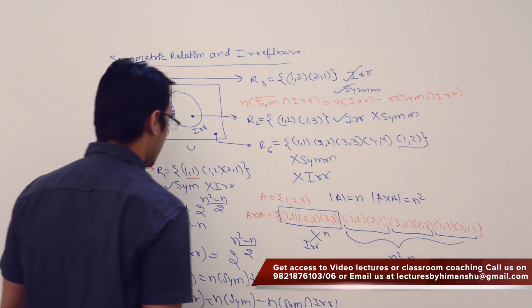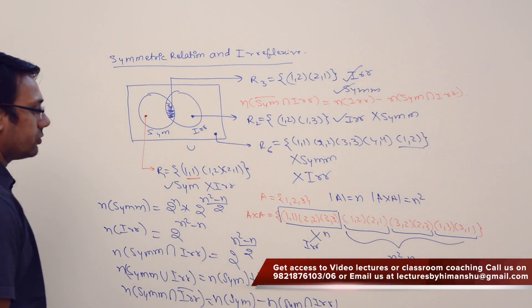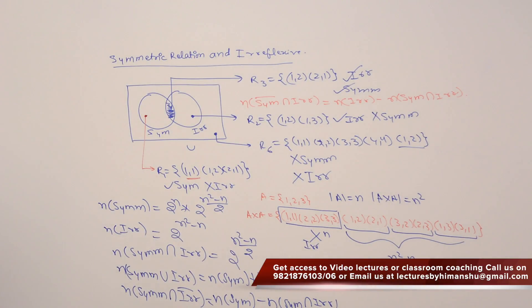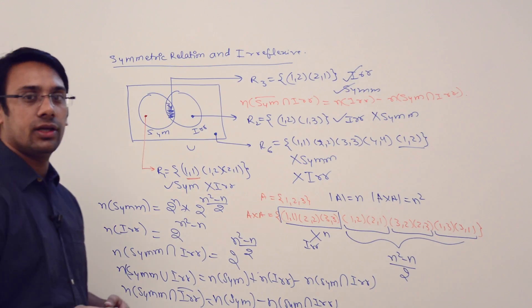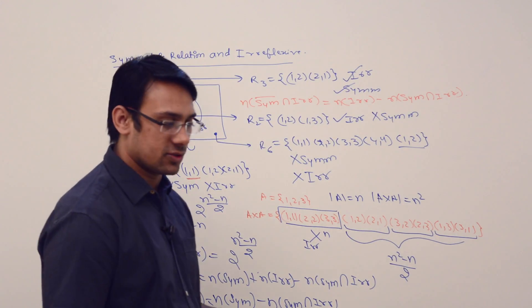We already know the values of each of these quantities. You can substitute them and get the final answer. This is the relationship between symmetric relations and irreflexive relations.